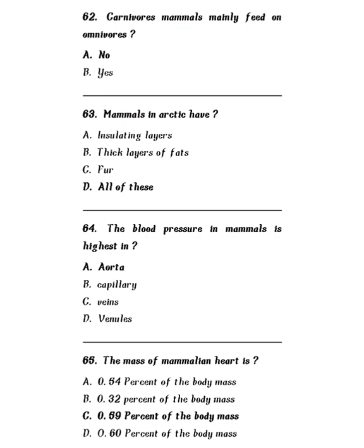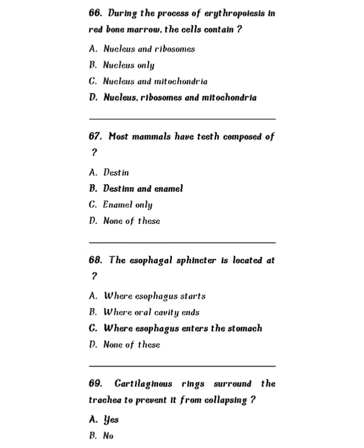Question 65: The mass of the mammalian heart is 0.54%, 0.32%, 0.59%, or 0.60% of the total body mass? The correct answer is 0.59% of the total body mass. This is not so important but for general information. Question 66: During the process of erythropoiesis in red bone marrow, the cells contain — nucleus and ribosomes, nucleus only, nucleus and mitochondria, or nucleus, ribosomes, and mitochondria? The correct answer is nucleus, ribosomes, and mitochondria. This is a very very important question.